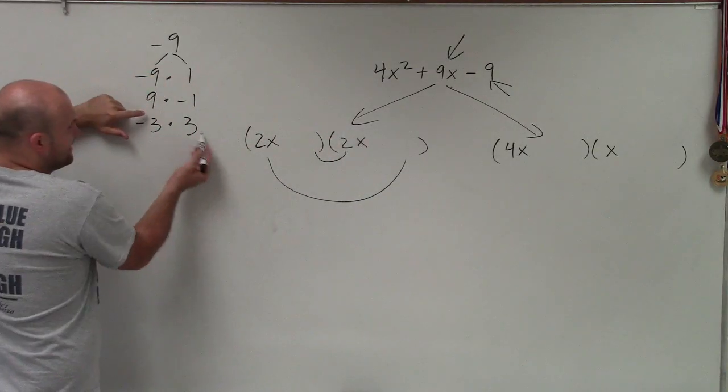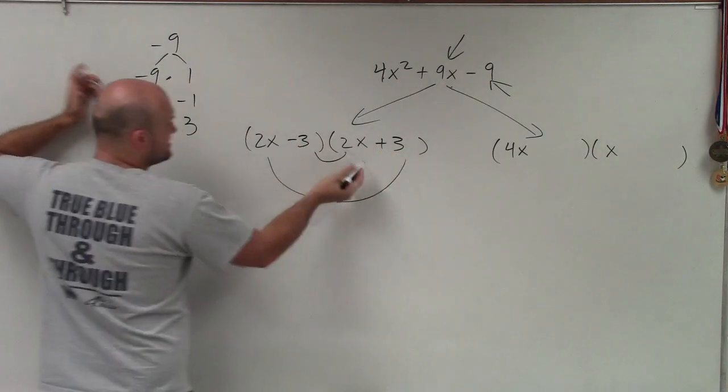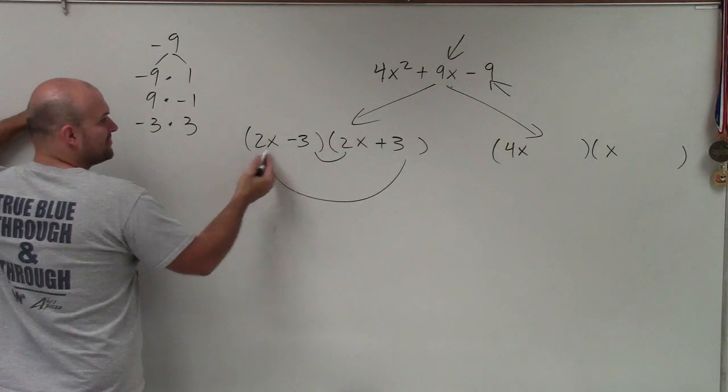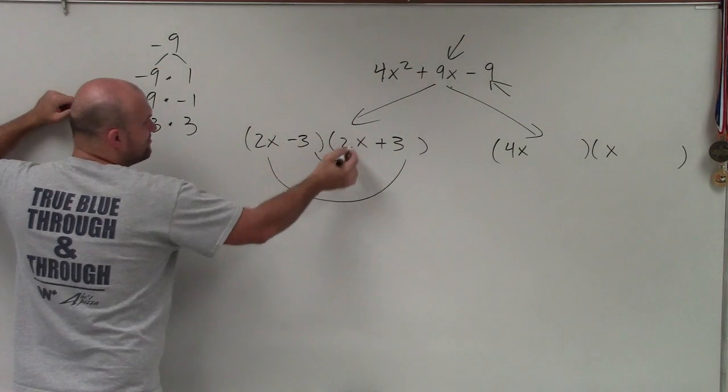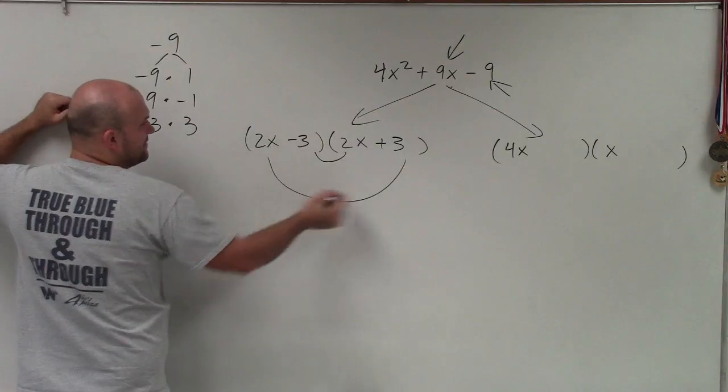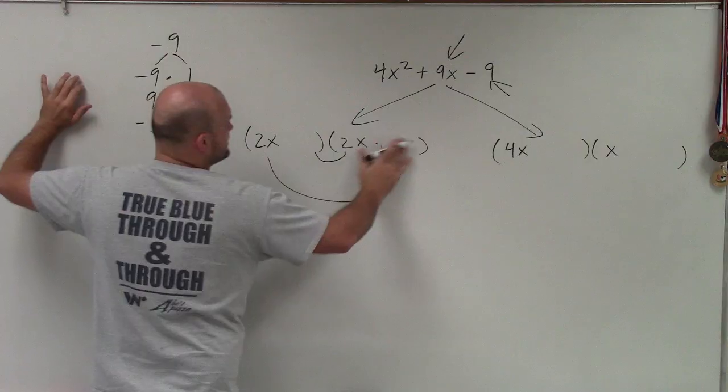So I see that negative 3 and positive 3 are not going to work, because this would be like a difference of two squares. When you combine these, they're going to give you 0x. We need to get 9x. So the only other option could be positive 9 and negative 1.